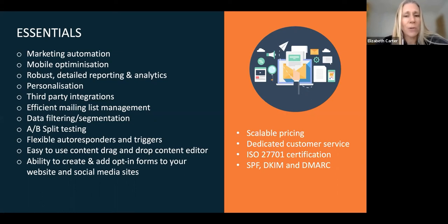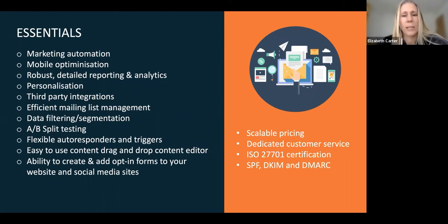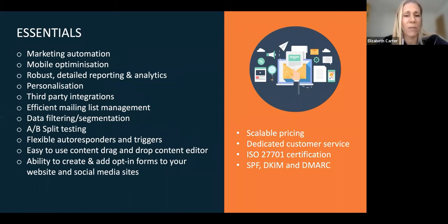Robust and detailed reporting and analytics are so important — you need really good metrics. One of the best ways to optimize your email open rates, clicks, and conversions is to explore fundamental email marketing metrics such as open rates, bounce rates, unsubscribe rates, and click-through rates — bearing in mind that an open is not an exact metric; it's only counted when an image has been enabled and a link has been clicked. You need to concentrate on click-to-open, because that's the most accurate.